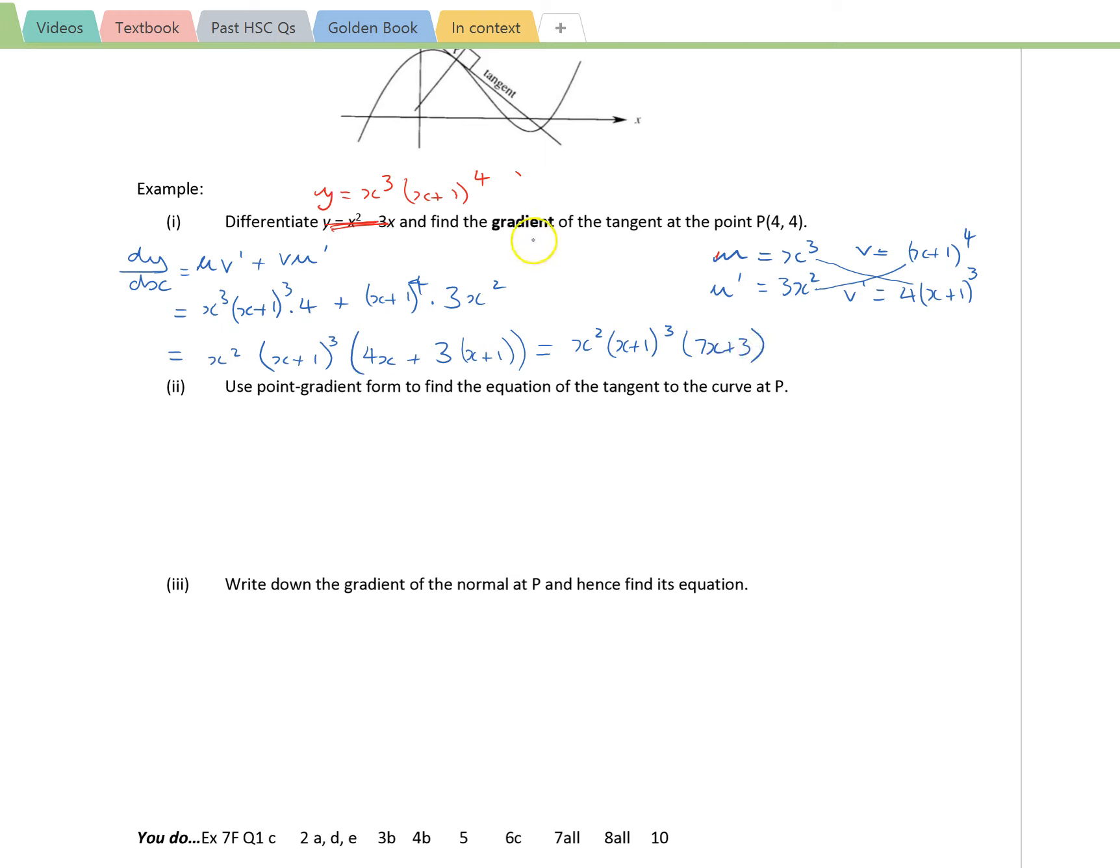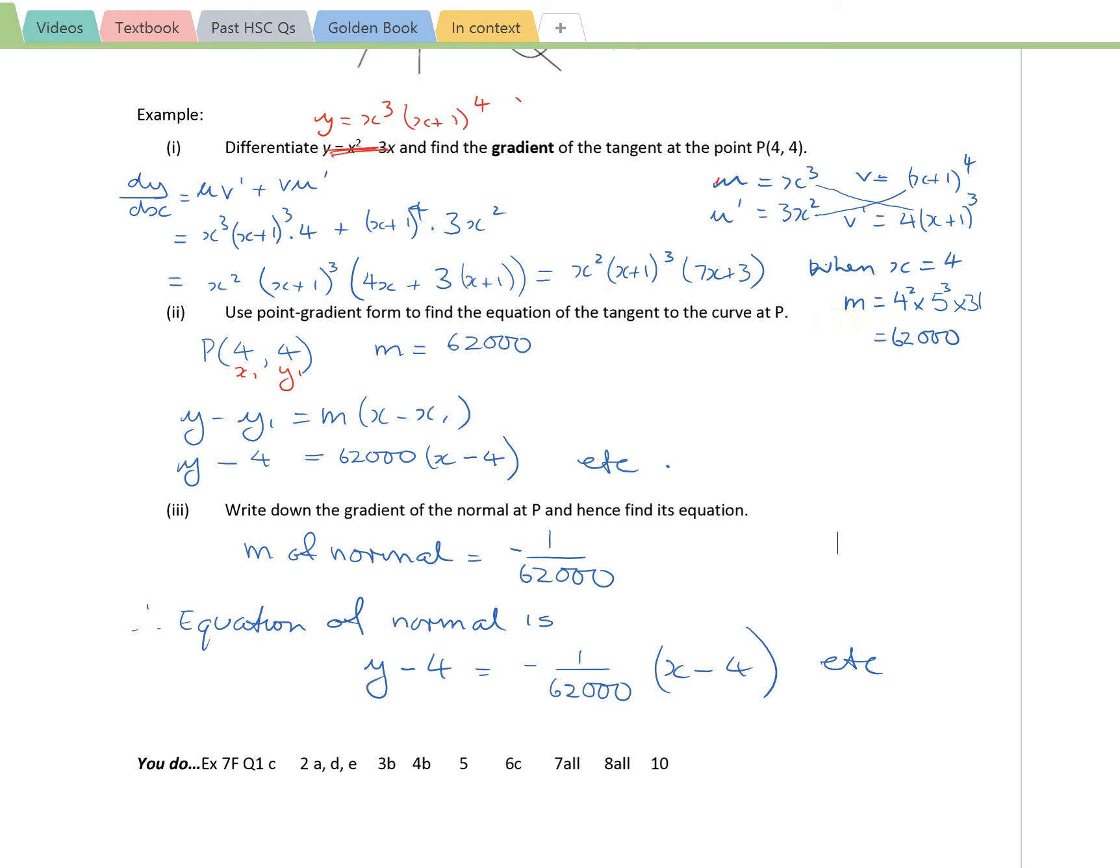It also goes on to ask you to find the gradient of the tangent. This is the expression of the gradient of the tangent, but the actual gradient at the point (4, 4). And so you can see there that when x is equal to 4, this gradient is going to be subbing 4 into this expression here. This is quite a large number, 62,000.